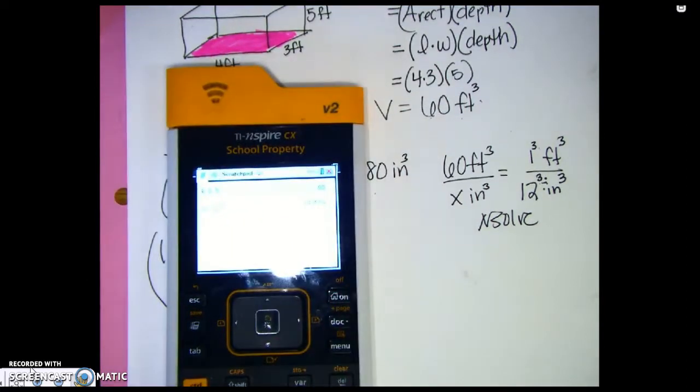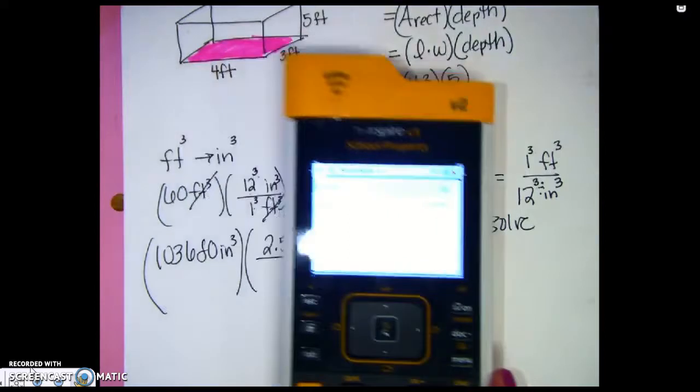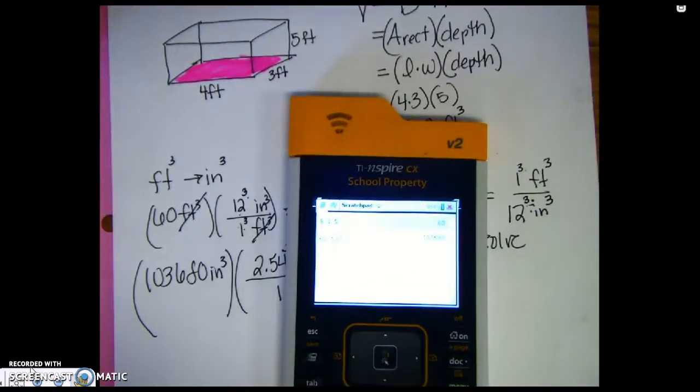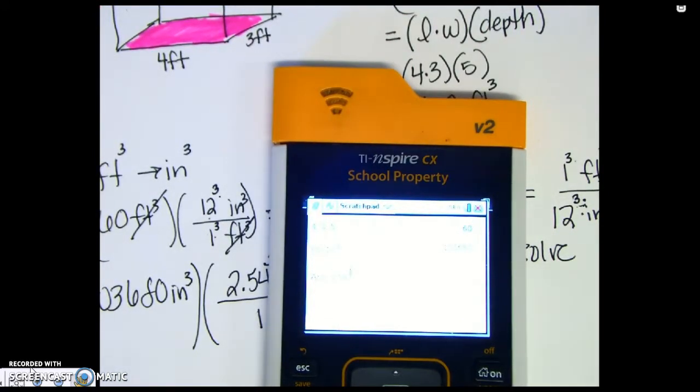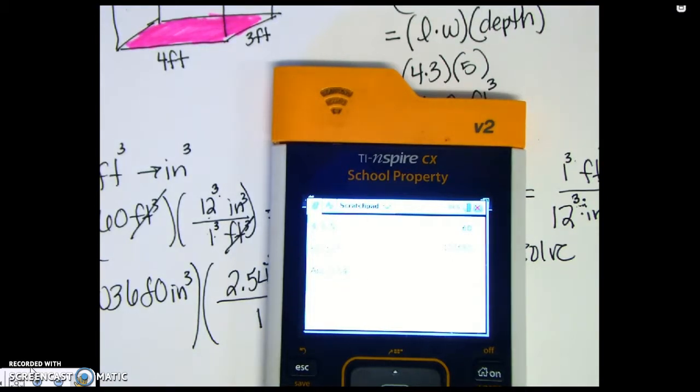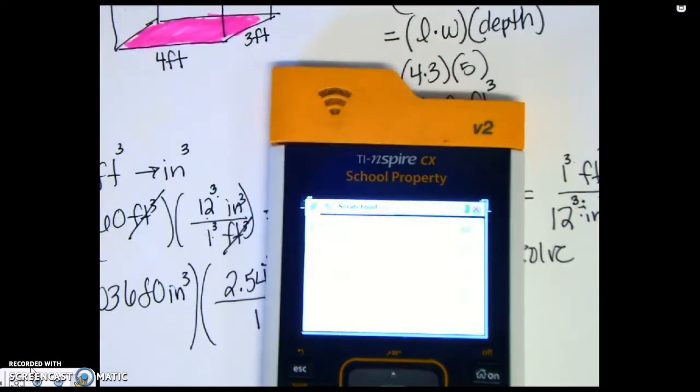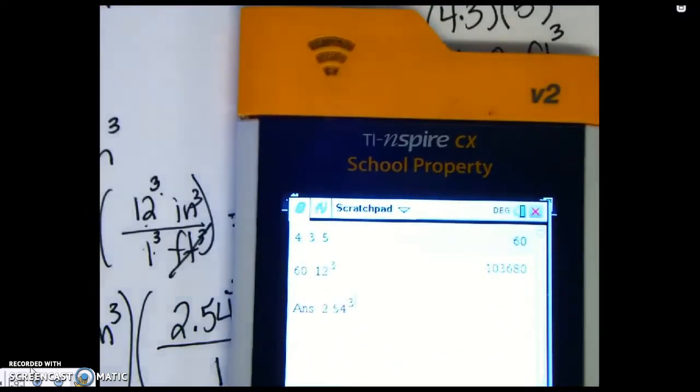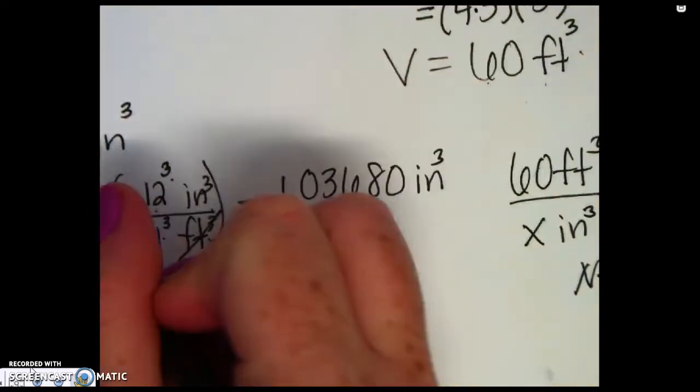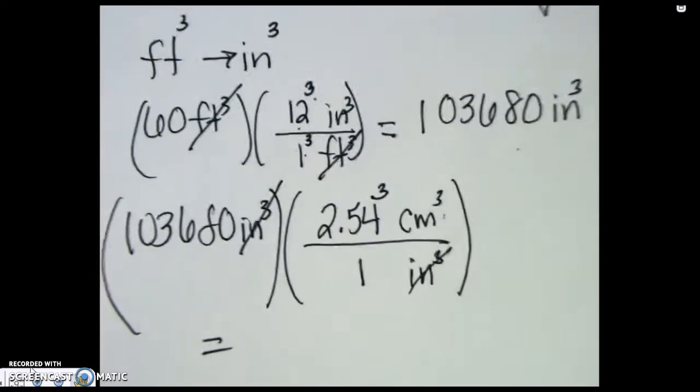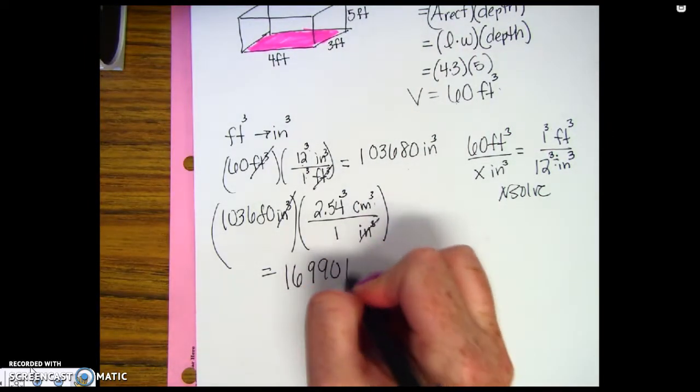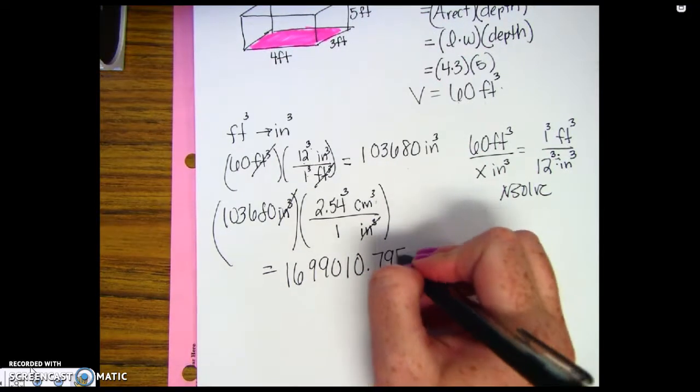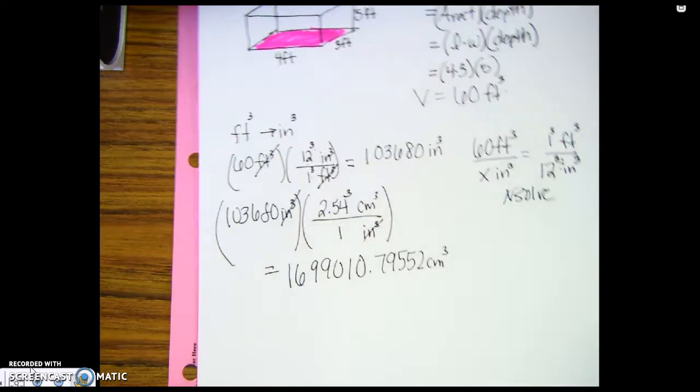I'm not deleting anything here. I'm showing you all my calculations in case some of you don't know where they're coming from. So what I have here is I'm going to take my answer and I'm going to multiply by 2.54 raised to the third power. Which again gives me this guy here. So this is equal to, inches divided by inches cubed reduce, and I'm left with 1,699,010.79552 centimeters cubed.